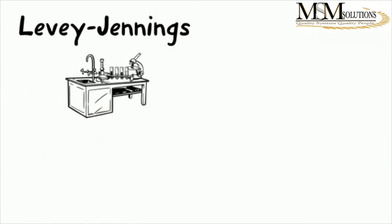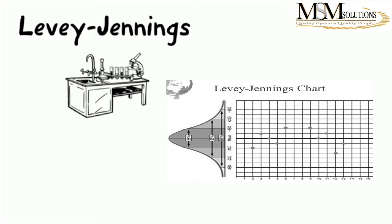In the lab, we talk about Levey-Jennings charts, which is essentially a Shewhart individual chart that was adopted for clinical laboratory studies. To construct this chart, you would have a line in the middle — a mean — which is your expected value of your control.